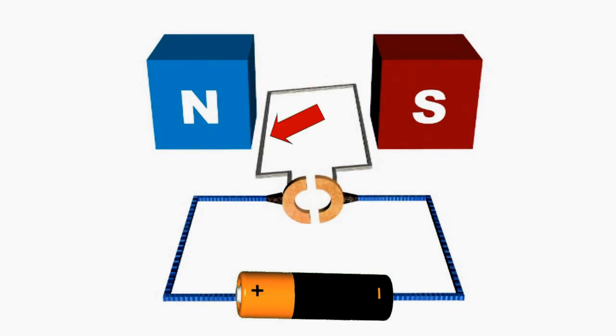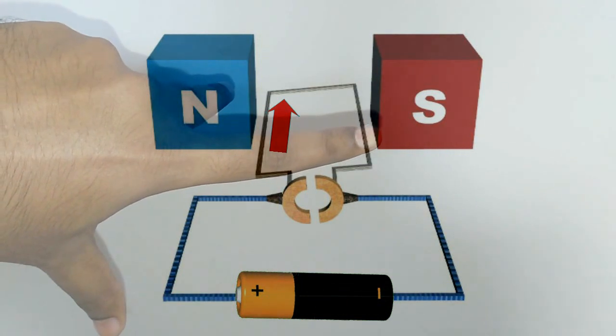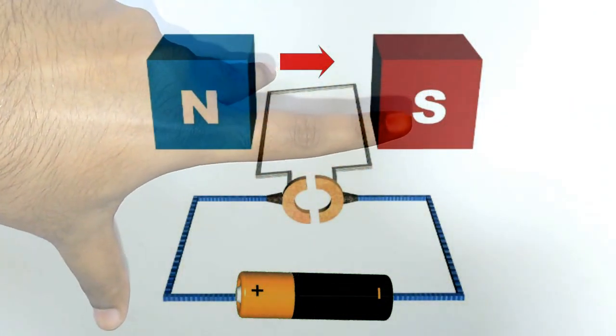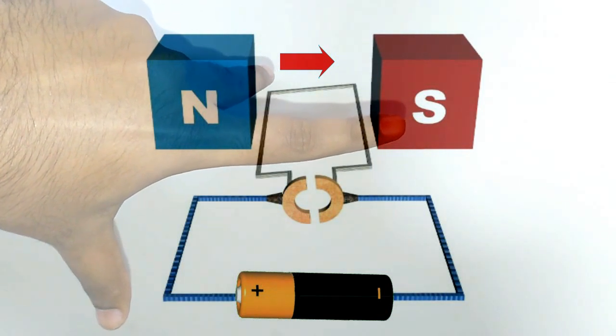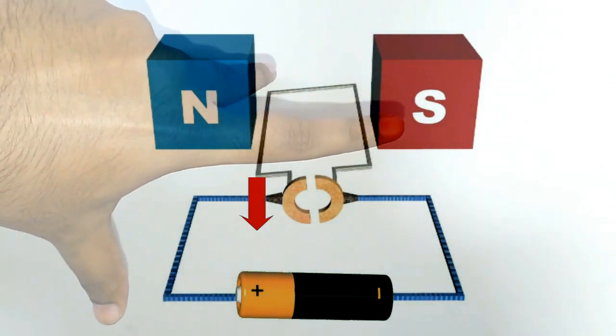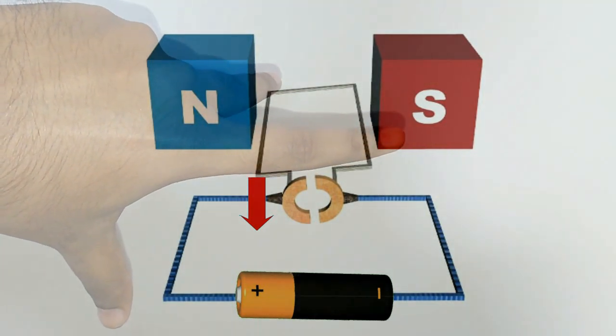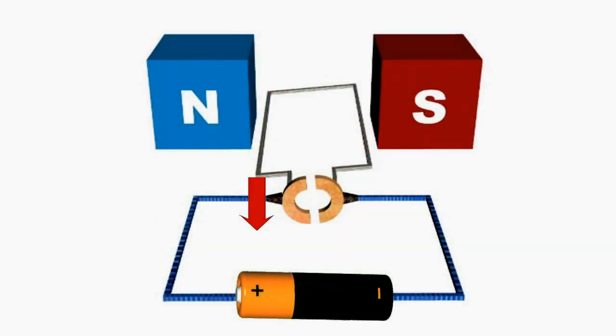Electricity is flowing in through this arm. The middle finger is pointing to the direction of electric current. The index finger is pointing to the direction of magnetic field, that is from north pole to south pole. So the thumb would be pointing to the direction of force exerted on the carrier. Here it is downward, so the arm would move downward.